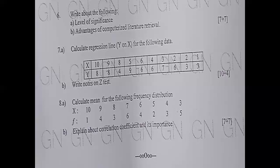Advantages of computerized literature retrieval — how things stored in digital media or on a computer are advantageous in the long term — you can describe that for seven marks. A nice question in question seven was a problem: calculate the regression line Y on X for the following data. You are already familiar — using X, Y, XiYi columns and putting values into the given formula. This can definitely be a scoring question.